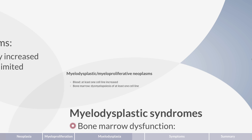Myeloproliferation and myelodysplasia may occur separately, such as in the previous groups, but both of these changes may also occur simultaneously, as shown in this mixed group. The slash in the name of this group is somewhat confusing, as it does not refer to either condition alone, but to a disorder that demonstrates characteristics of both.